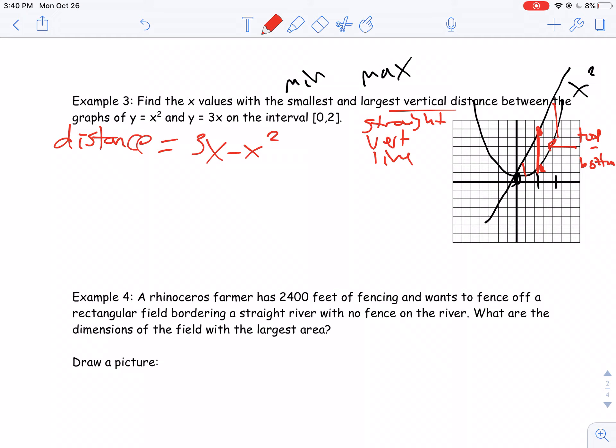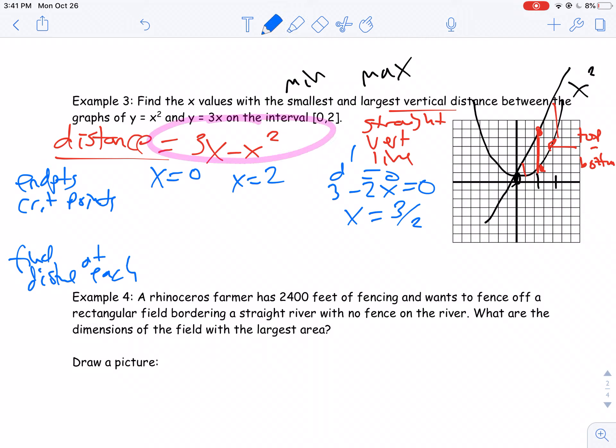Okay, so now that I have my distance, I've set that up. Now I'm ready to go ahead and find my endpoints, and then find my critical points, and then go ahead and find the distance to answer the question. So my endpoints here are x equals 0 and x equals 2. Those were given to me. And my critical point is when my distance prime is 0. So 3 minus 2x equals 0. So my x is 3 halves. Okay, so now all I have to do is find the distance at each of these. So again, all these problems are the same. The setup is a little different. But all these problems, you just need to find where the endpoints are, find where the critical points are, and then just go ahead and plug in somewhere.